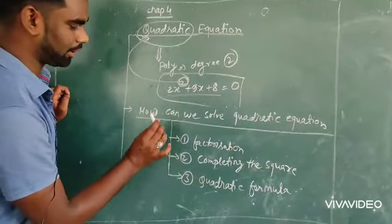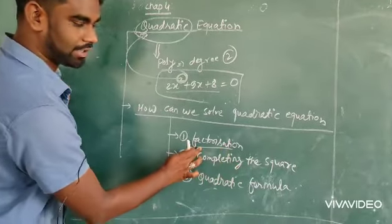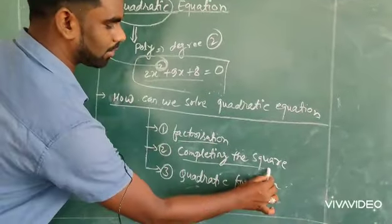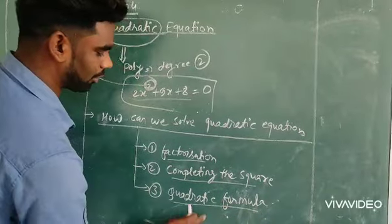There are 3 methods to solve quadratic equation. The first one is factorization method. The second one is completing the square method. And third one is quadratic formula.